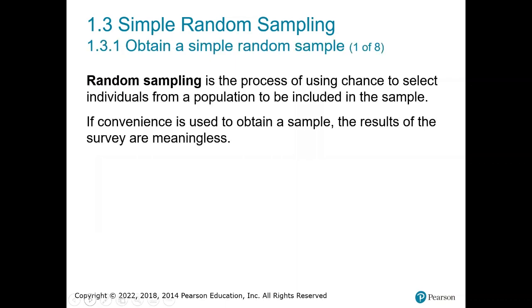Random sampling is the process of using chance to select individuals from a population to be included in the sample. We want to be random — we want to make sure that everybody has an equal chance of being selected so that we get an accurate representation of our population.